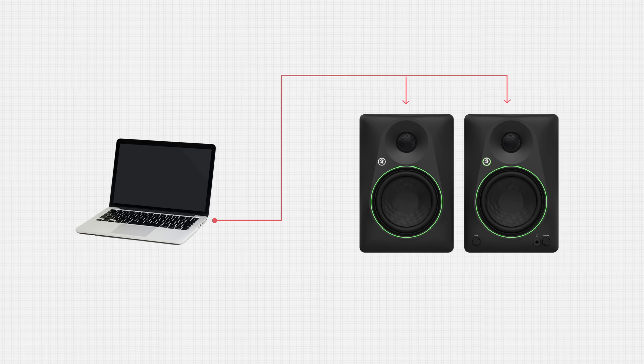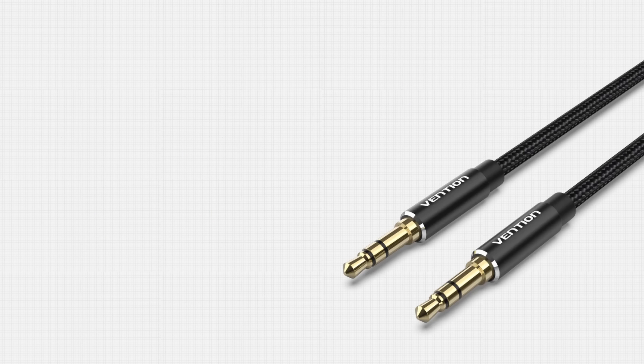The most basic way to connect studio monitors to your computer or another playback device is to use the built-in audio output on the device, such as a 3.5 millimeter or eighth inch output jack. To do this, you'll need an adapter with an eighth inch plug on one side and whatever connection your studio monitors have on the other side.